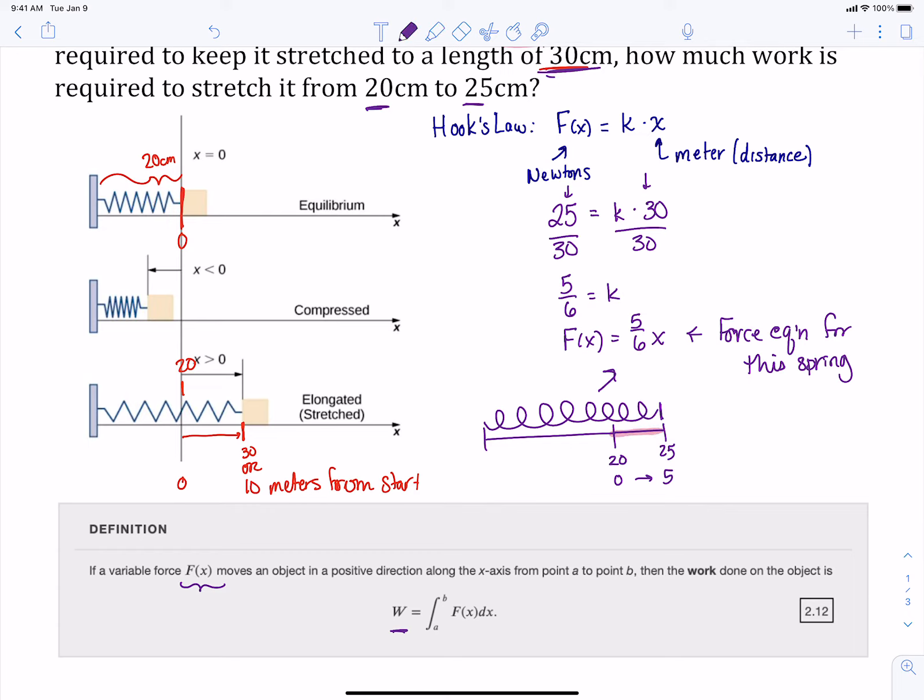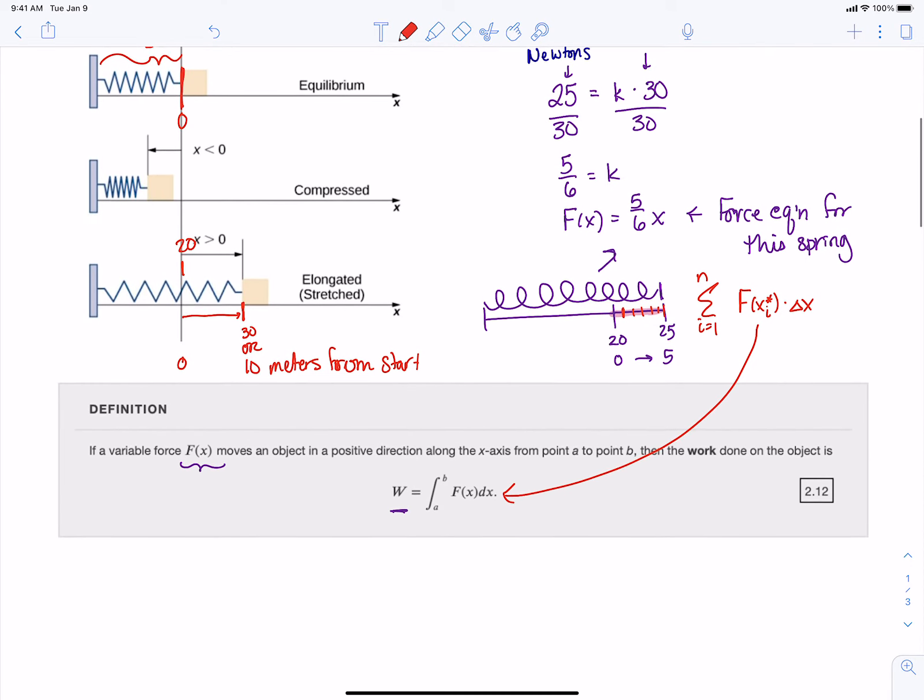It's going to take less work when we're closer here to the natural length, and as we get closer and closer to that 25. We've got to chop that up, and what we would look at is the force on a particular interval times how much we've moved it, which is delta x. If you look down here, that's how we're going to get our integral, because if we take this and find the sum from one to n, and then take our limit, we're going to get that integral.